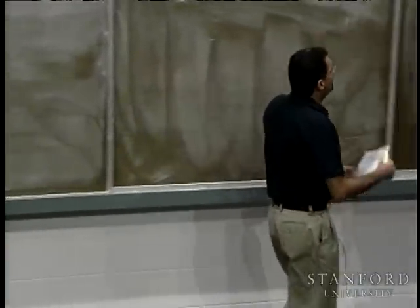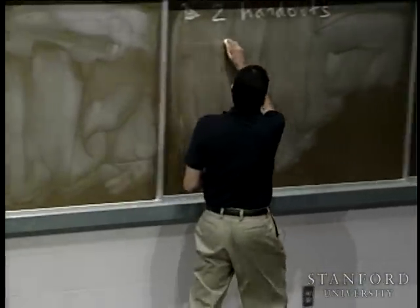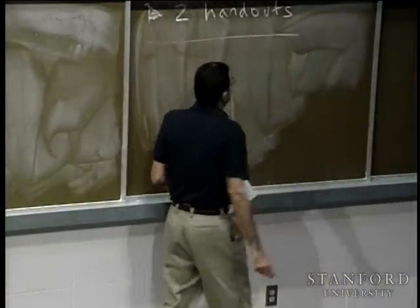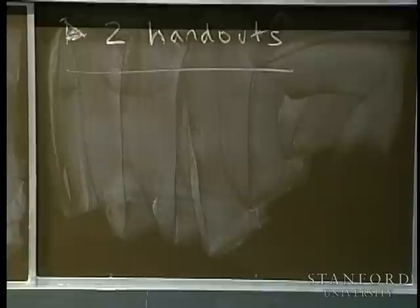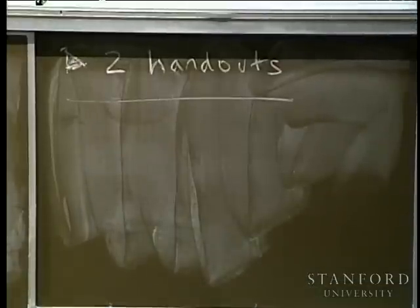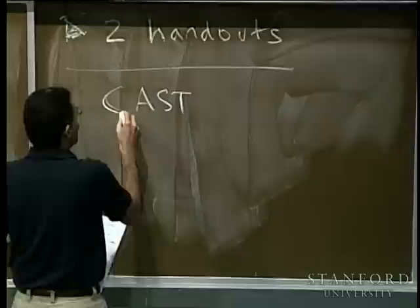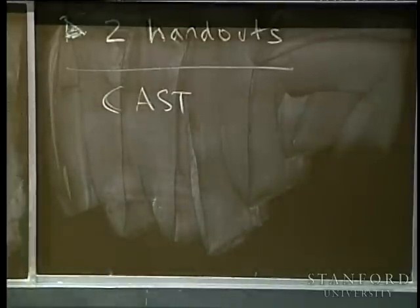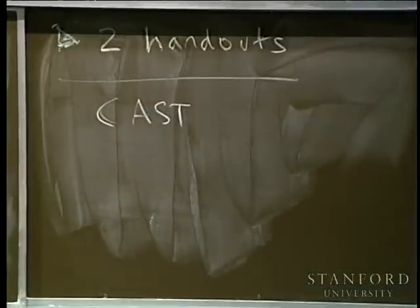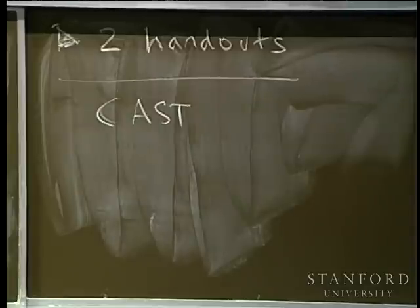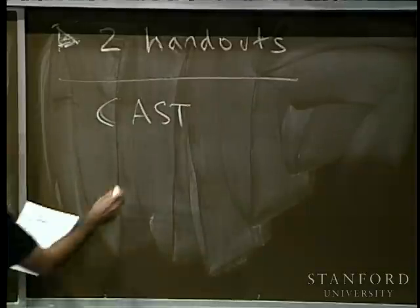One quick point before we dive into the main meat of the lecture — a clarification on something we did last time called a cast. Remember the cast? It's the thing that allowed us to say: treat this one data item, this one variable, as a different type for one particular operation.